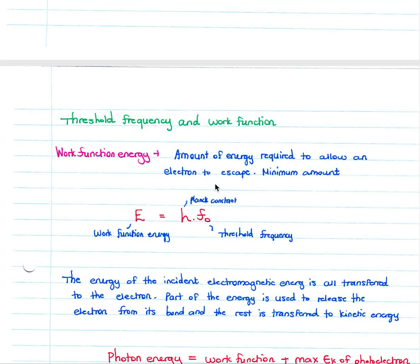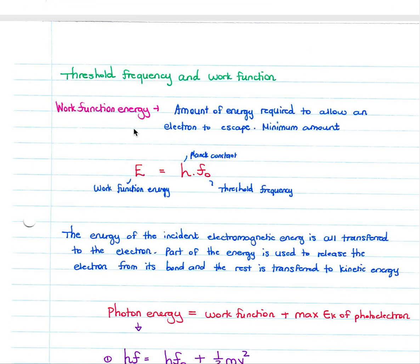When we look at threshold frequency and the work function: the work function energy is the amount of energy required to allow an electron to escape — it is the minimum amount of energy needed for an electron to be emitted from a metal. Your work function energy E is equal to Planck's constant times your threshold frequency. Your threshold frequency is different for each metal.